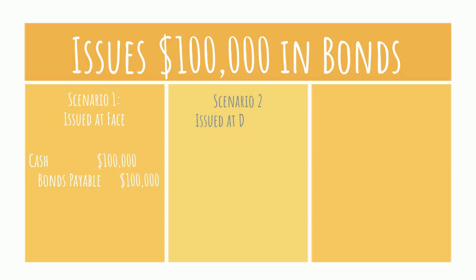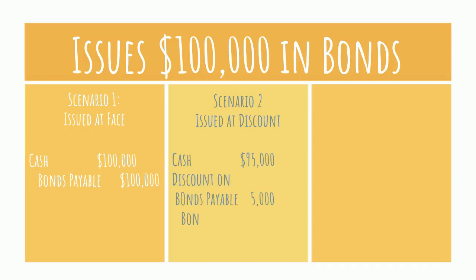The company would debit cash for the amount they received — let's assume it was $95,000 — debit discount on bonds payable for $5,000, and credit bonds payable for $100,000.